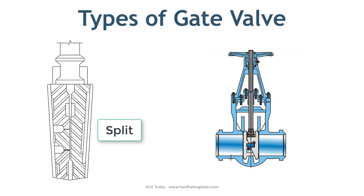There is another design in the split disk category known as the parallel disk gate valve. In a parallel gate valve, the gate consists of two disk parts set between two parallel seats, one at upstream and one at downstream. These valves are spring-loaded to seal properly.